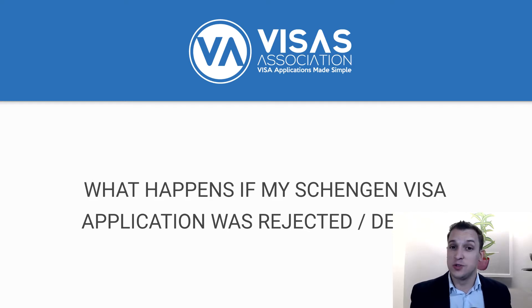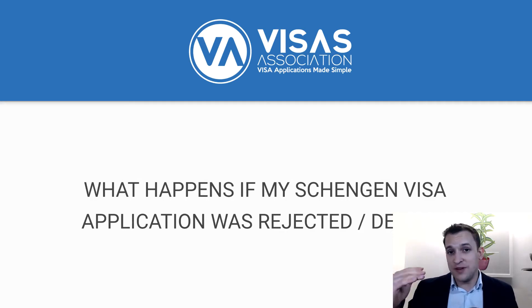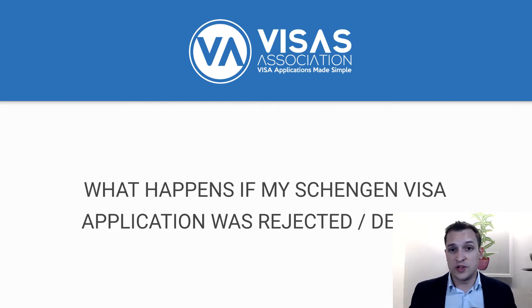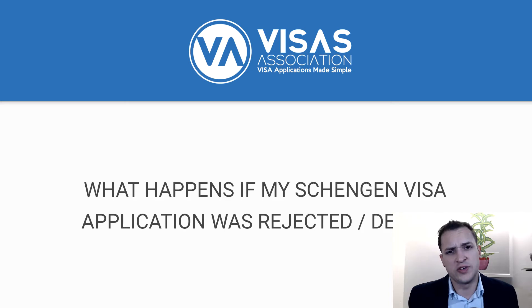But imagine if they do happen — what do you do? I'll break this down into a few key parts, but towards the end of the video I'll actually give you a bit of an appeals letter that you might be able to apply in your situation when you're writing an appeal or a request for review to the embassy or consulate that has refused you. Just know that there are a couple of reasons why a Schengen Visa application has been refused.